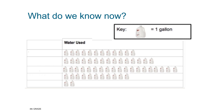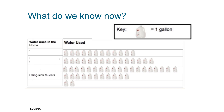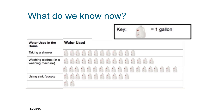Now we have more information. What do we know now? We can now see that this pictograph is telling us about water uses in our homes and that one of those water uses is using sink faucets. Now we can see how much water taking a shower and washing clothes in a washing machine uses. Whatever is here uses a lot of water — I wonder what it could be. What do you think?